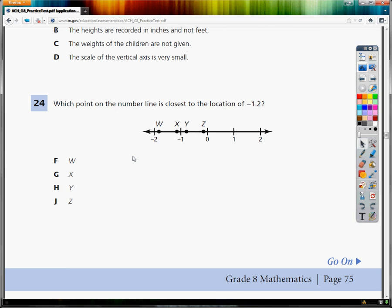This is the TCAP 8th grade practice test. This is question number 24. What point on the number line is closest to the location of negative 1.2?